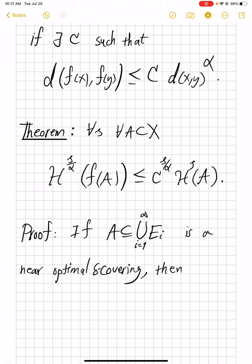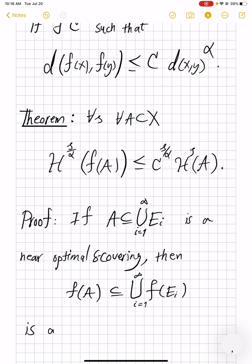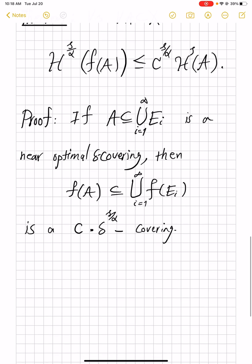Then f(A) is obviously contained in, this is a set theoretic thing, f(E_i)'s, is a delta to power, so basically, this C is inconsequential, but the main point is, this will be S over alpha covering. Because now, the control over diameter of f(E_i) is only C times diameter of E_i to power alpha. So this is just C times diameter of E_i to power alpha. That's because of the definition of Hölder continuity.